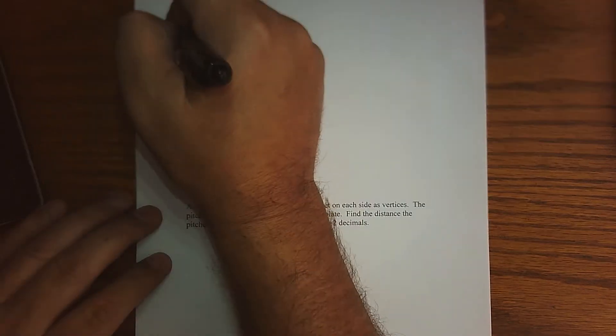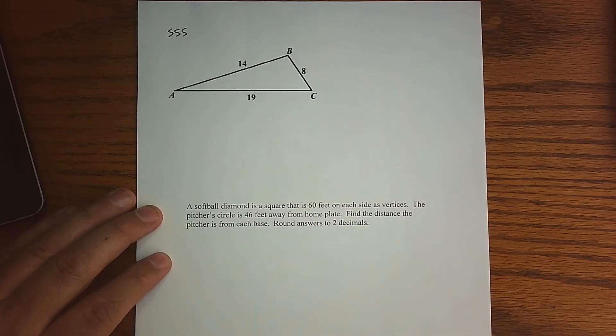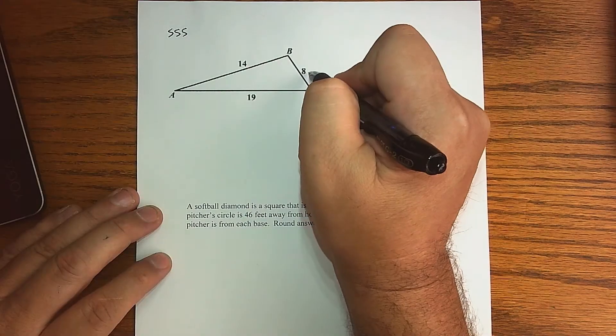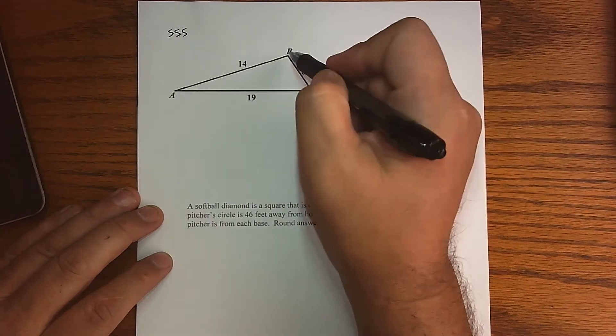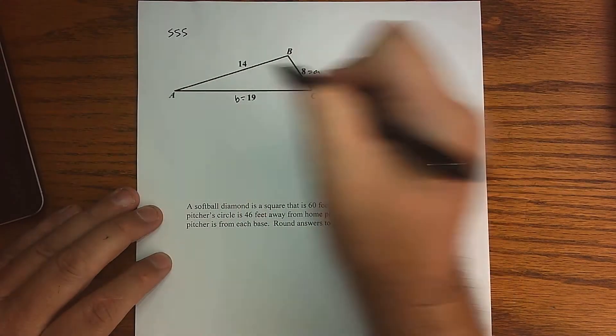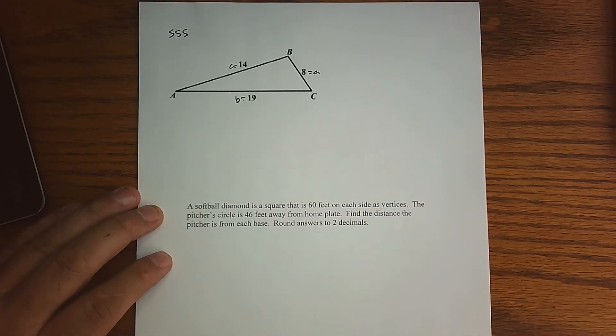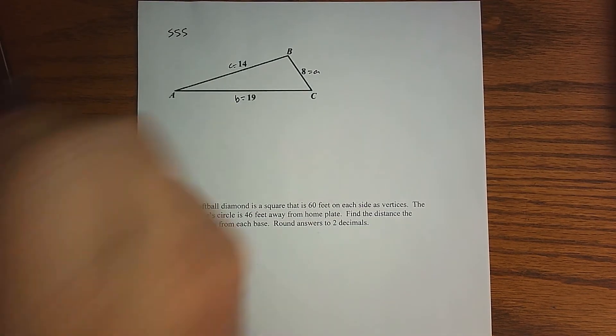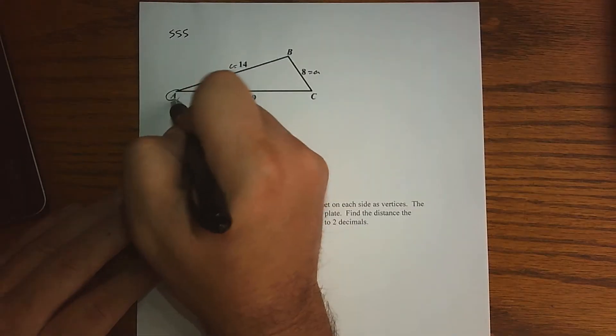Alright, so what about a side, side, side? That's the next example that I have. I don't know any of the angles, but I do know that side A is 8, side B is 19, and side C is 14. And so essentially what we are allowed to do, any one of them, how about I do A.